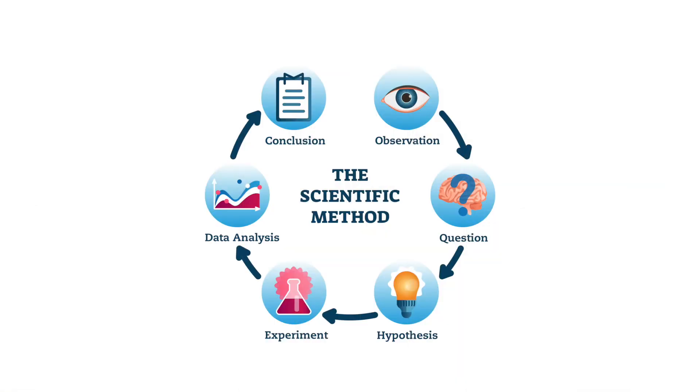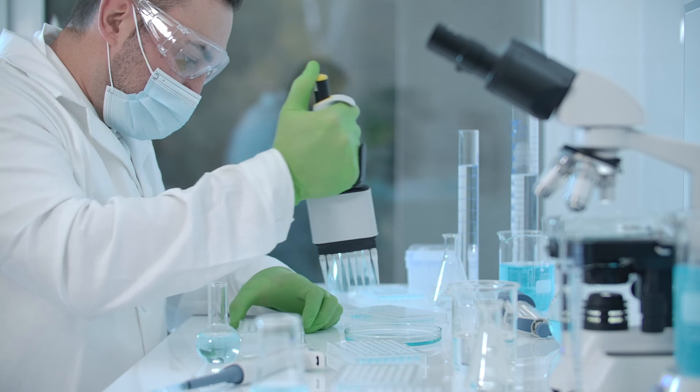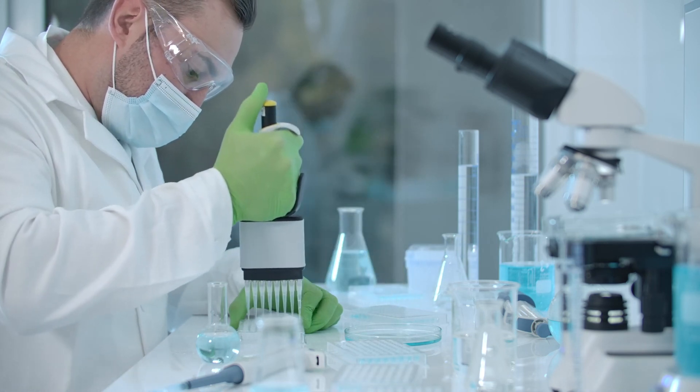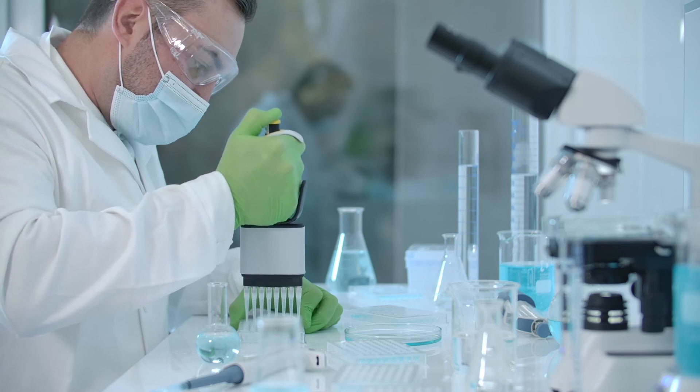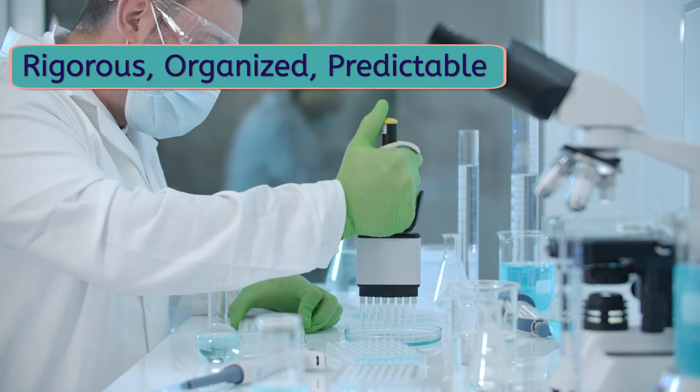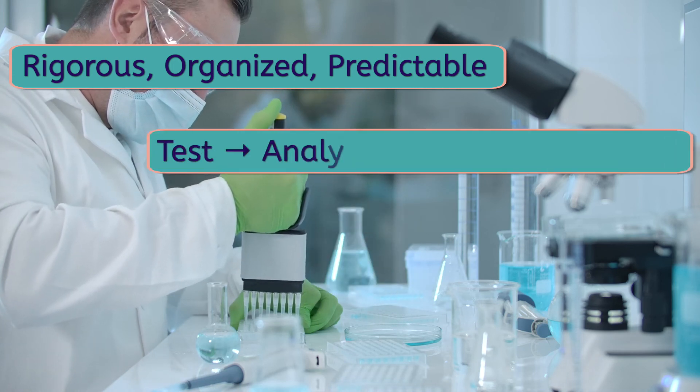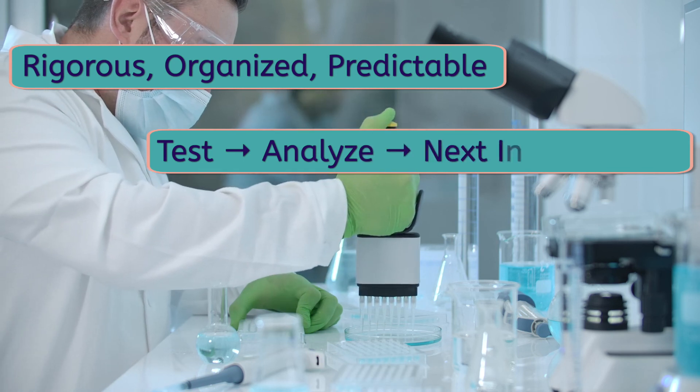So to wrap up this experiment, let's review what we've done! We went through each step of the scientific method, from observation to question and hypothesis, to setting up our experiment, and finally to analyzing our data and drawing a conclusion. But remember that the scientific method is more than just a method. It's a whole way of thinking objectively and approaching questions. It is rigorous, organized, and predictable. It's also an endless cycle of testing, analyzing, and using those results to drive the next investigation.